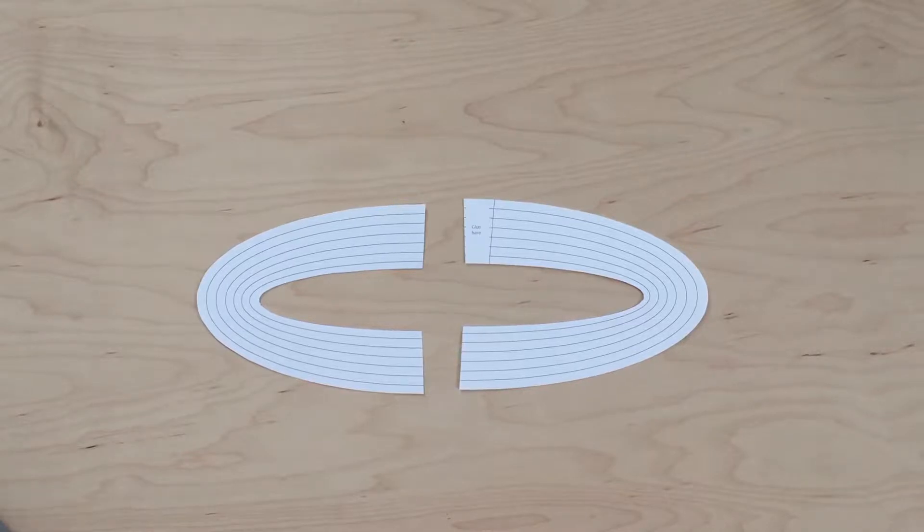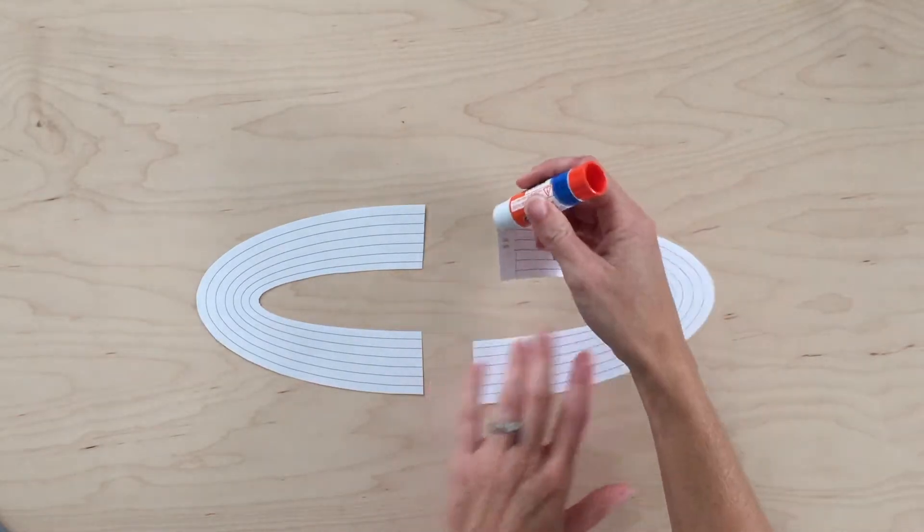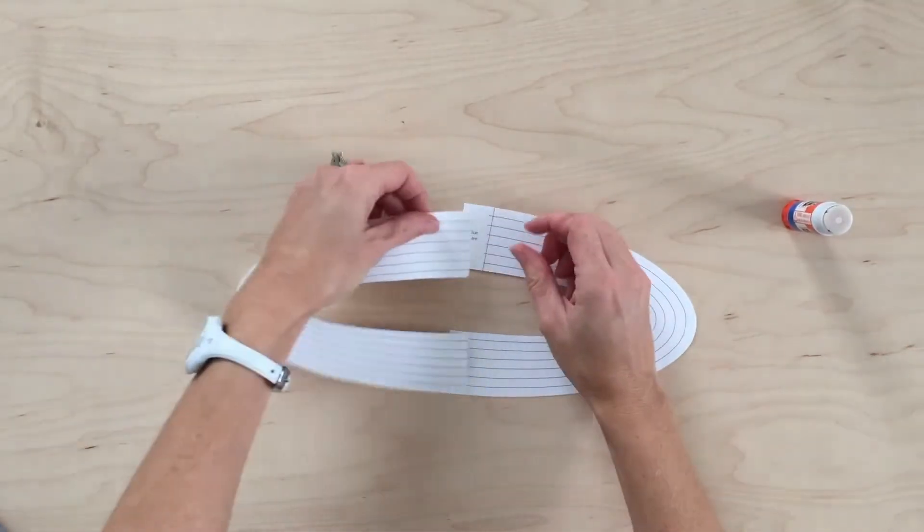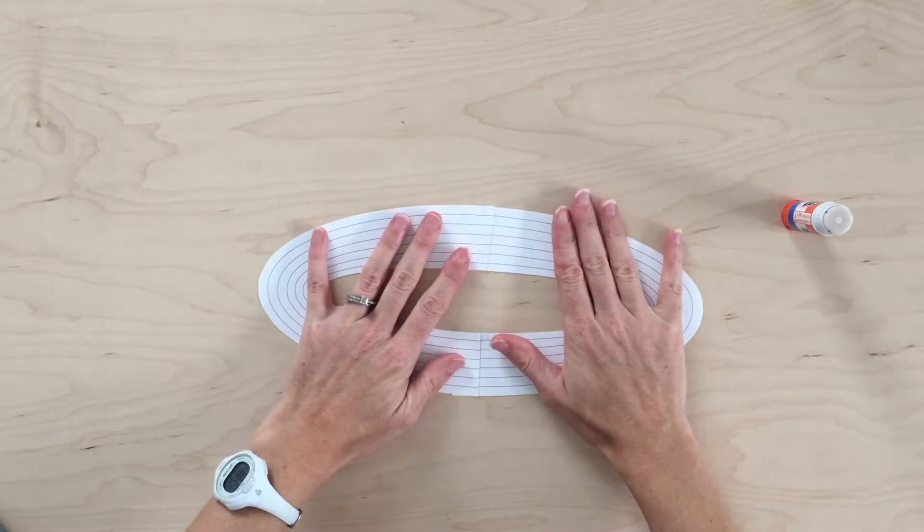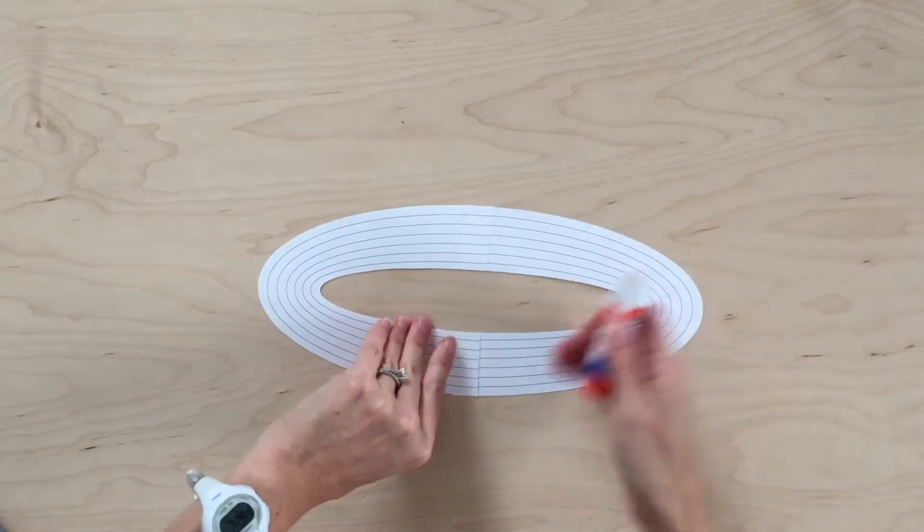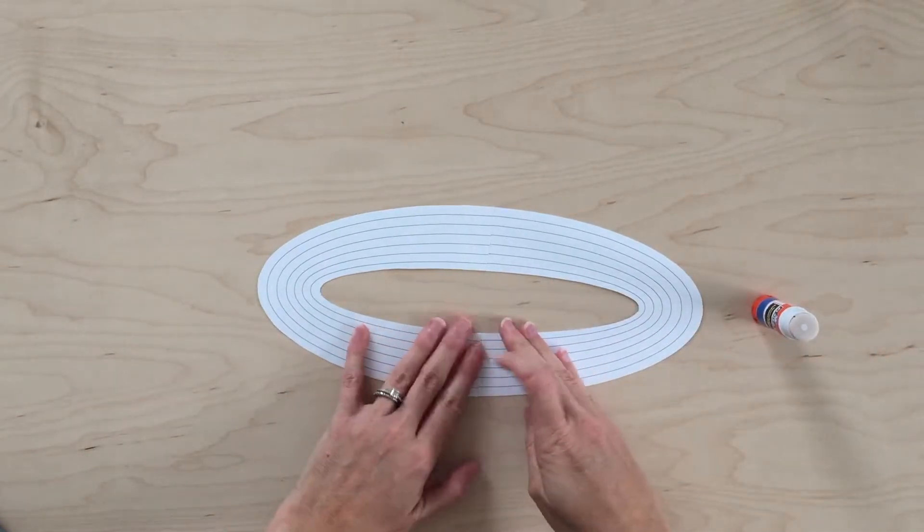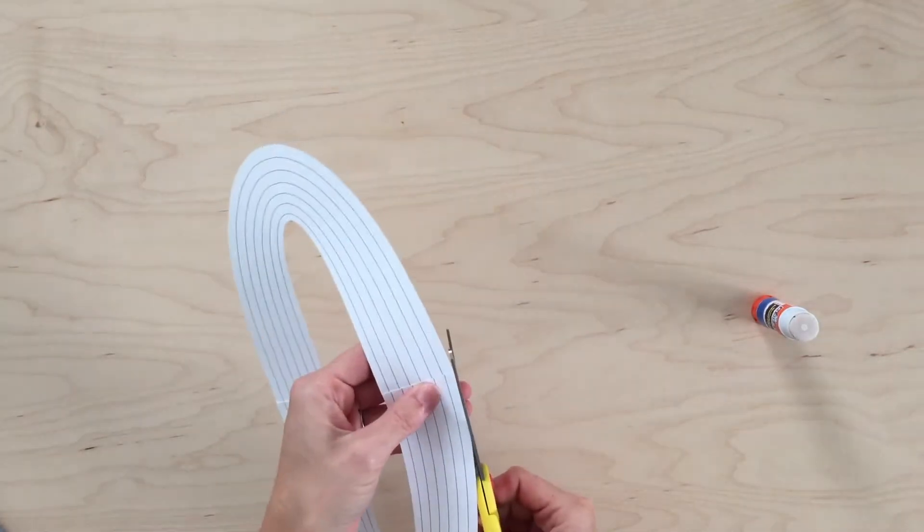I started to color Saturn's rings and I realized that they were really hard to color without some lines on there. So I redid Saturn's rings for you and I put a line to show you about where to glue it. And so just like this. And if you have a little paper sticking out right here, go ahead and cut that off.